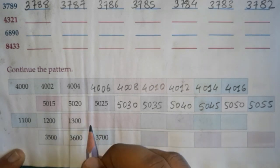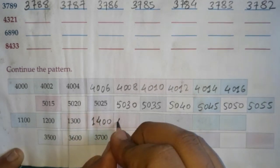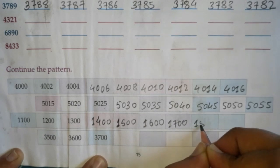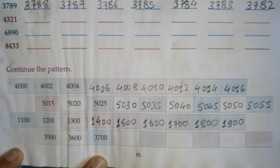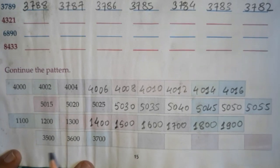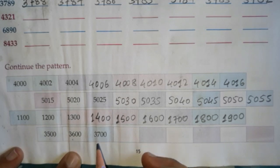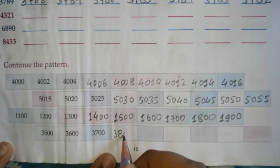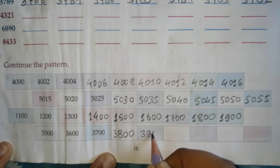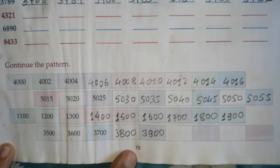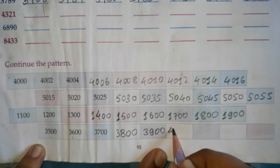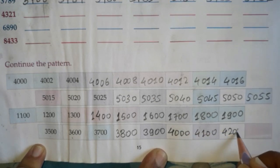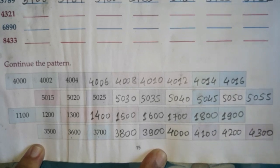Next pattern: they are adding 100 to each number. 1100, 1200, 1300 — next will be 1400, 1500, 1600, 1700, 1800, 1900. Next series is 3500, 3600, 3700 — again adding 100. Next numbers: 3800, 3900, 4000, 4100, 4200, 4300. The series continues like this.